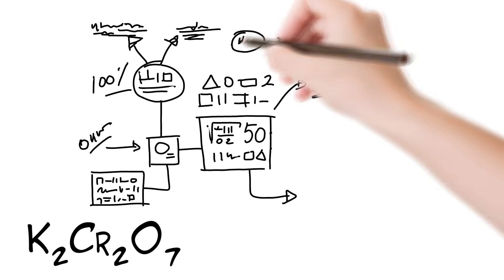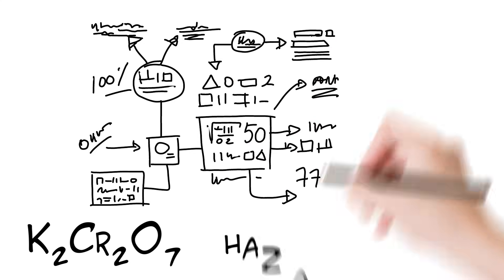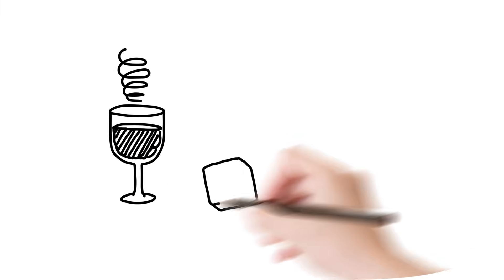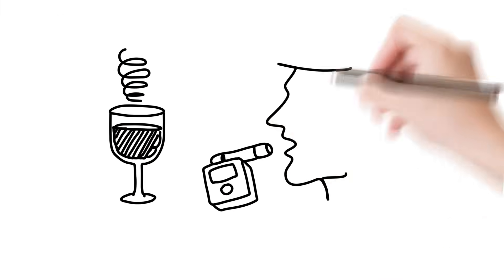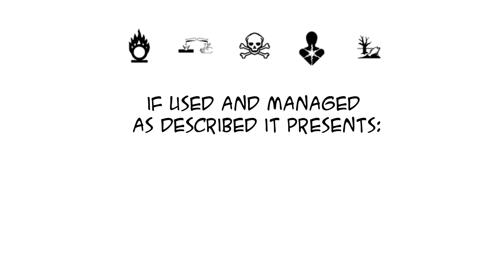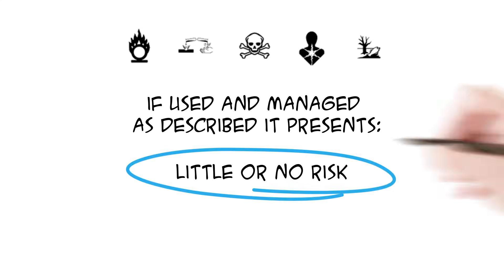But what does this actually mean? Let's look at two examples. First, potassium dichromate. It sounds scary and it is indeed a hazardous substance that is both toxic and carcinogenic. It is used in some cases to analyse exhaled breath for alcohol. For this purpose, it is sealed in a tube. Therefore, although it is intrinsically a hazardous substance, if used and managed as described, it presents little or no risk to people or the environment.